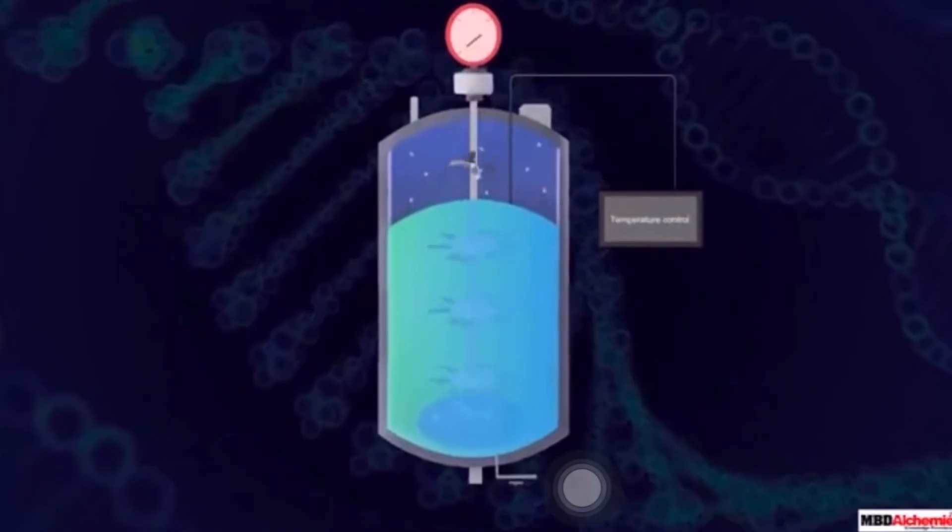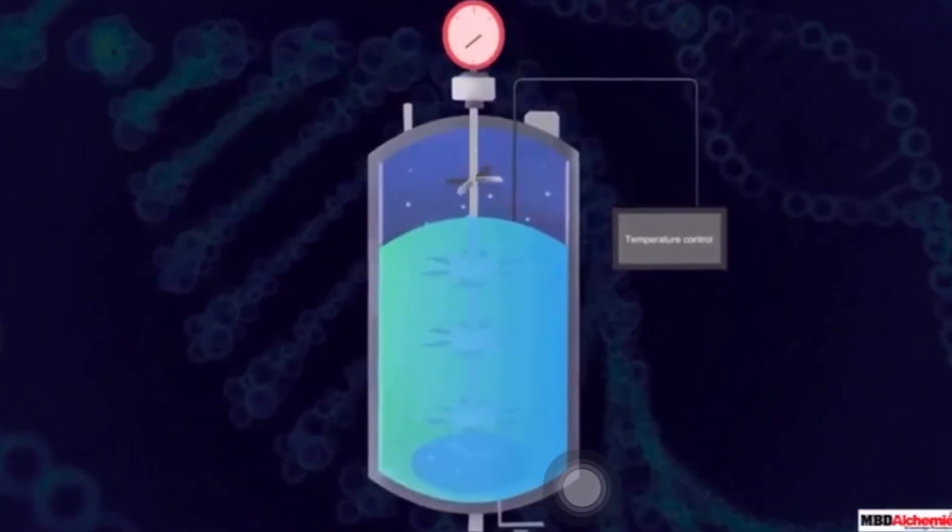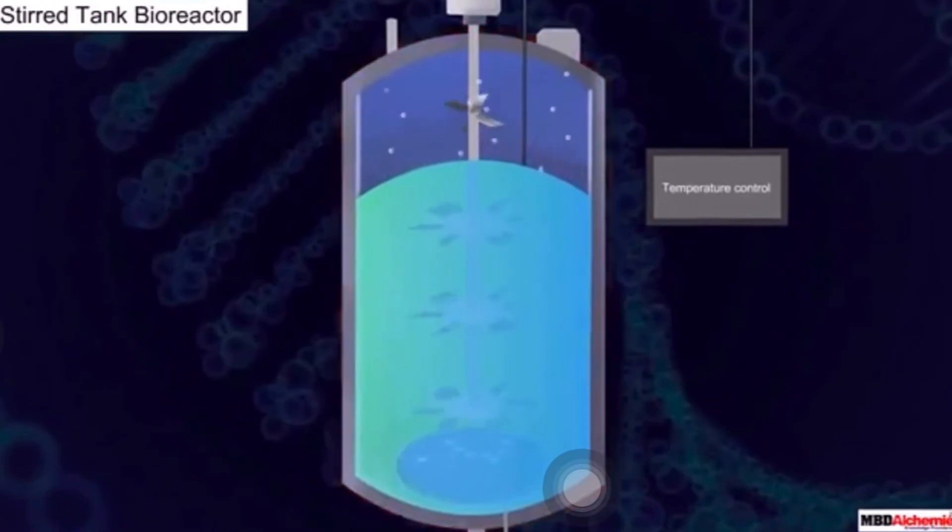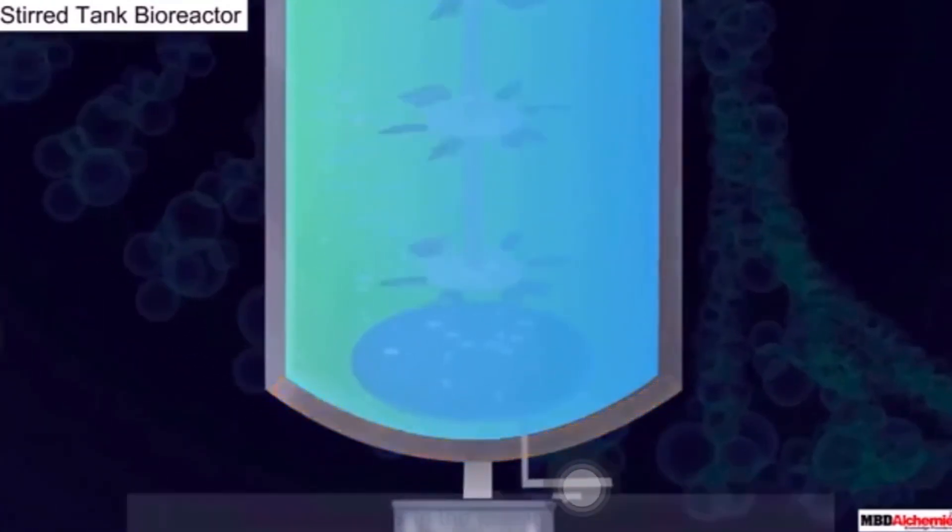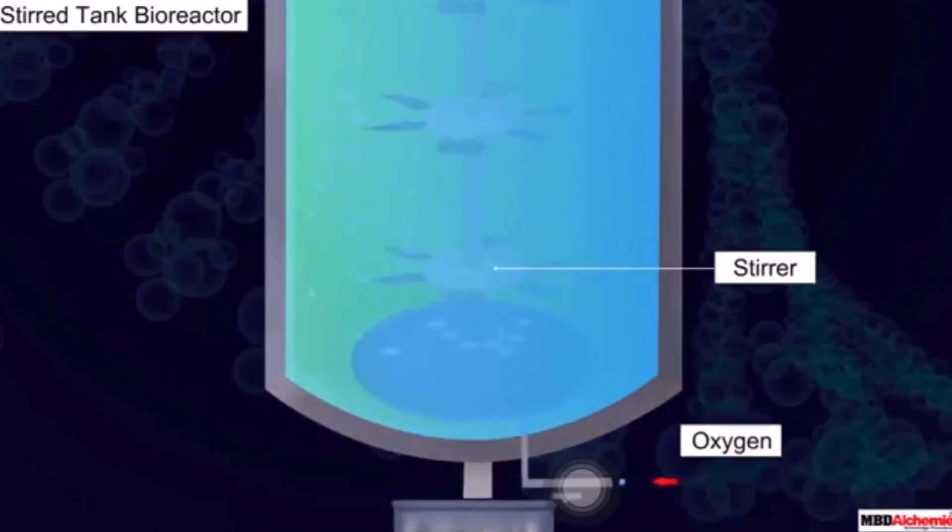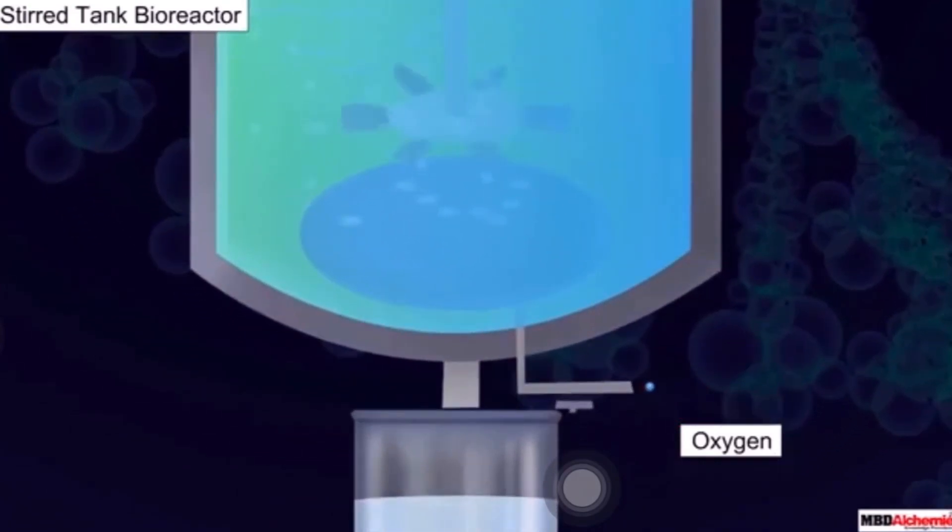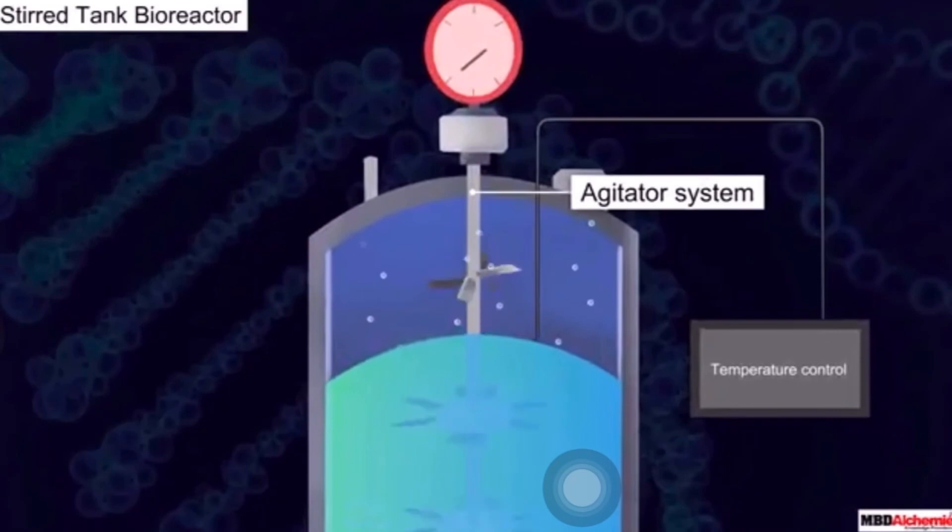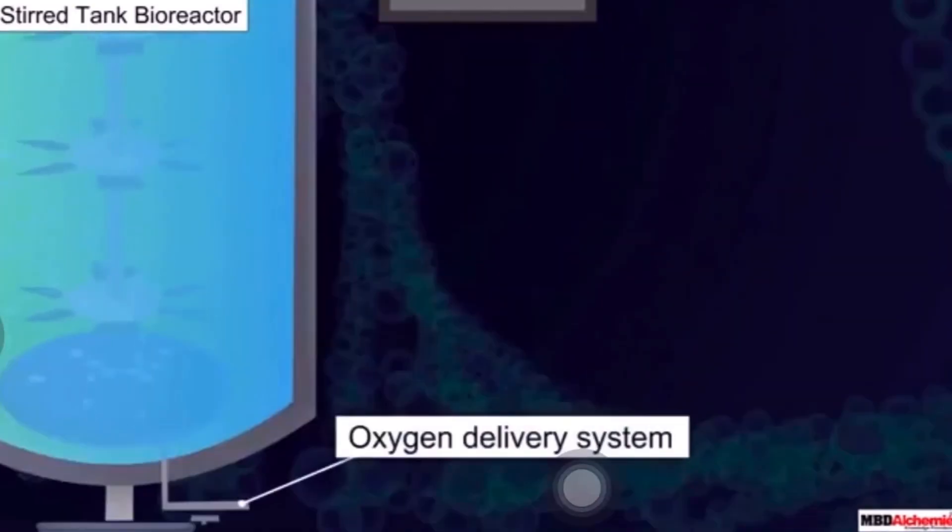A stirred tank bioreactor is usually cylindrical, you can see here, with a curved base. The curved base helps in mixing of the reactor content. The stirrer helps in mixing the content as well as providing the needed oxygen. The reactor consists of an agitator system to mix the content and oxygen delivery system to supply the oxygen.